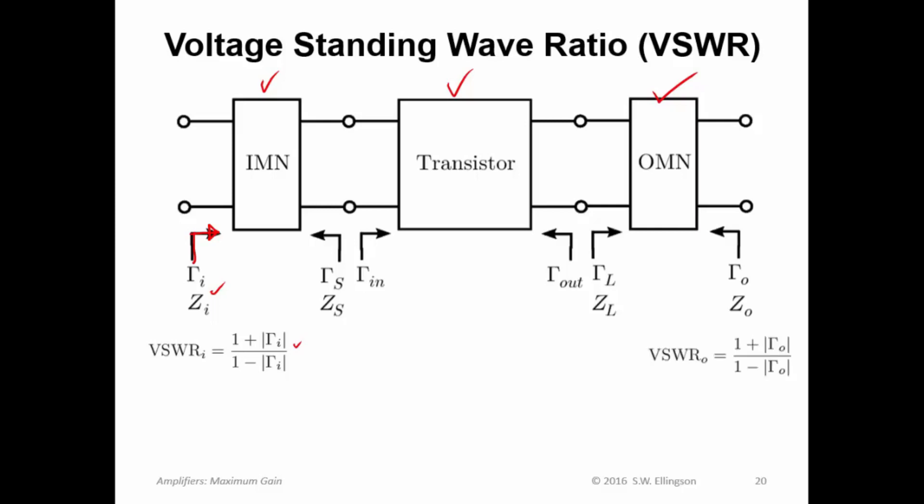Similarly, the output VSWR depends on the output reflection coefficient, its magnitude, and that's what we get looking in this way from the output, and I'll point out that corresponds to z sub o. That's not a zero. That's an o here.